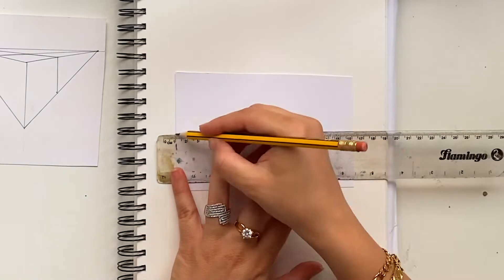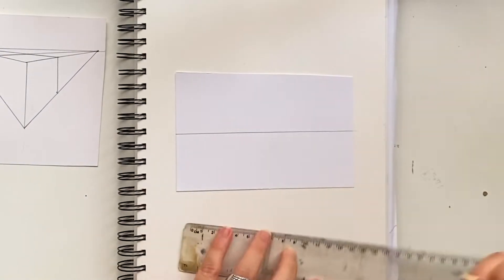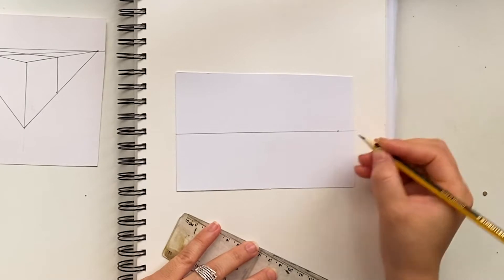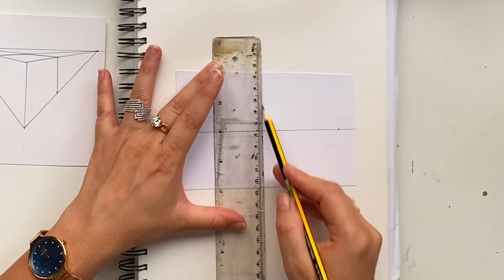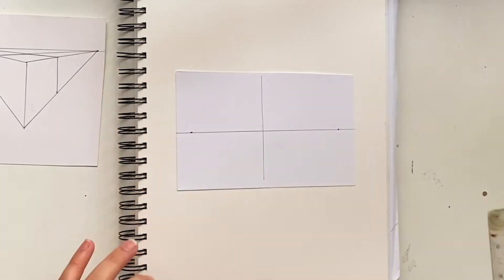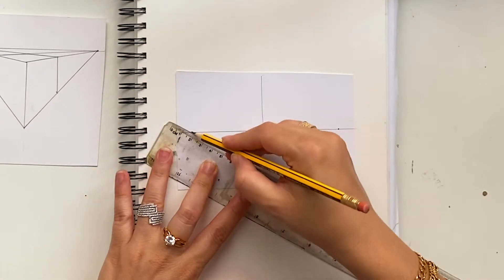We are going to draw a building in two-point perspective. We're going to draw a horizontal line in the center of the page, then put two vanishing points on the horizontal line, one on the right side and one on the left side.